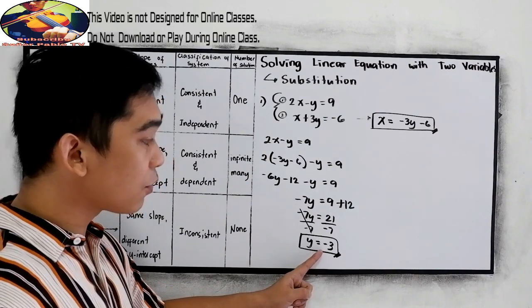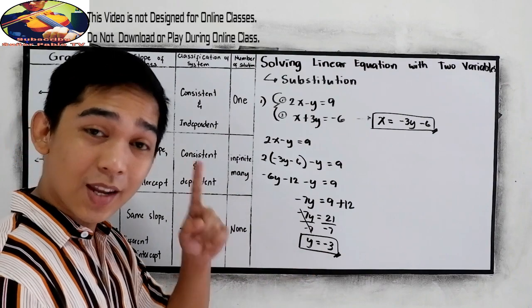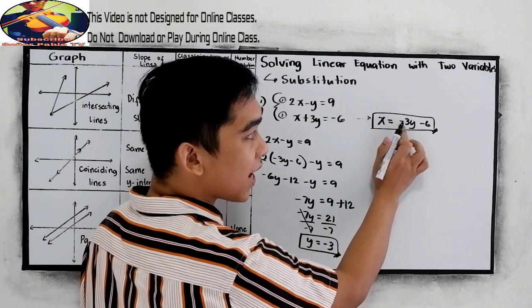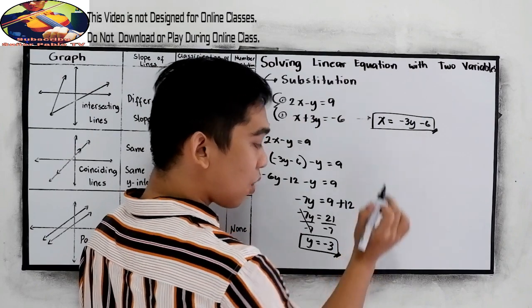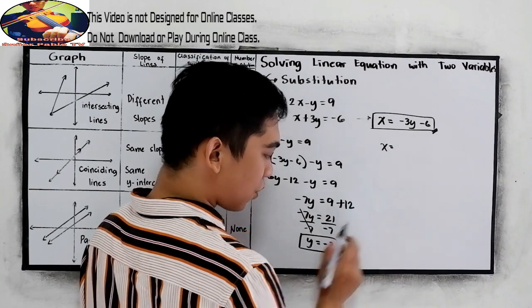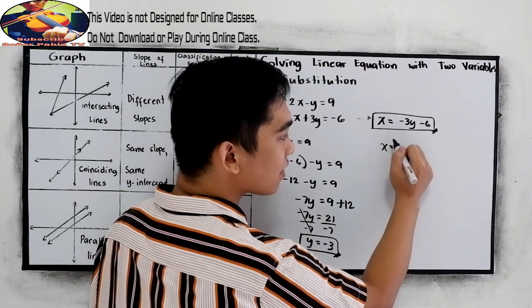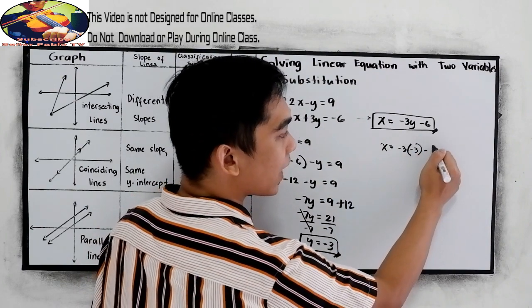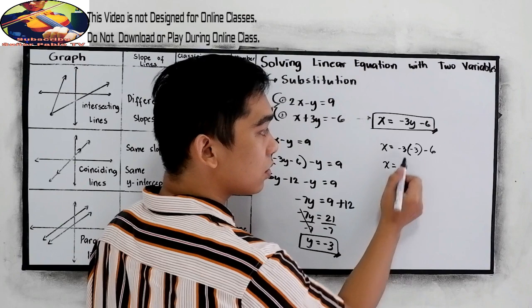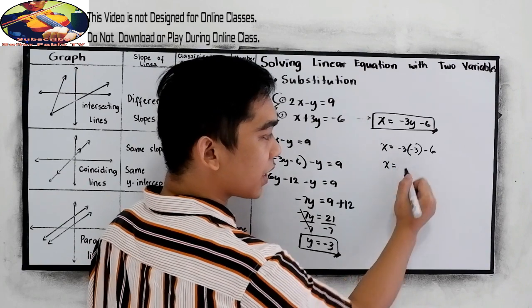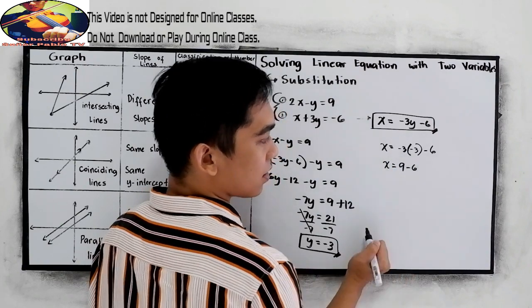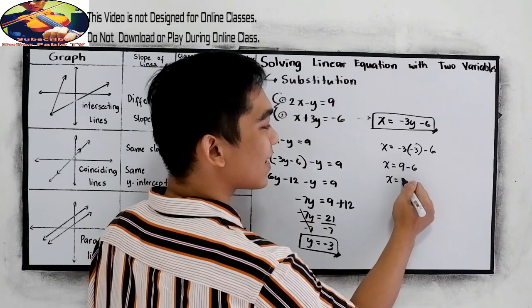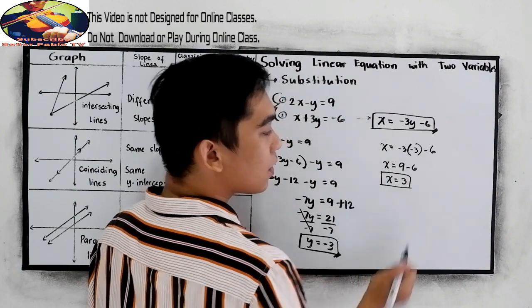Now we have a value for y, we can get the value for x. Notice that x is equal to negative 3y minus 6. All we need to do is substitute the value for y. So x is equal to negative 3 times negative 3, minus 6. Negative 3 times negative 3 is positive 9, minus 6, so x is equal to 3.